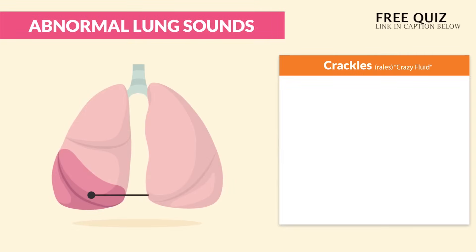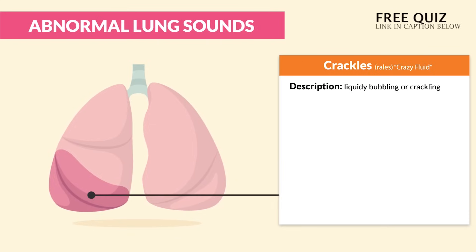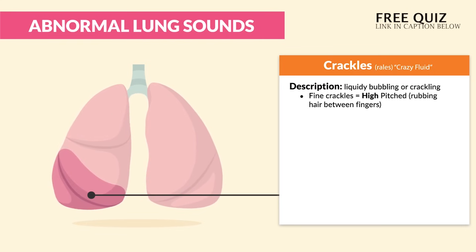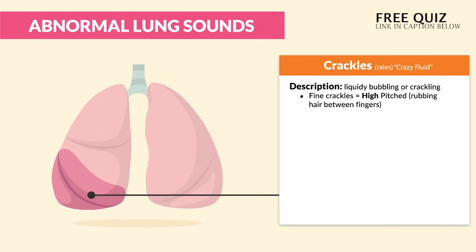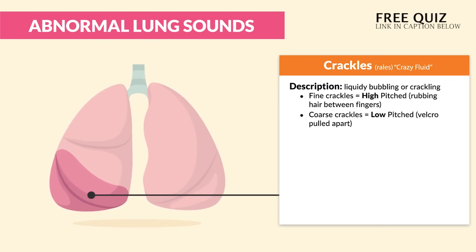Next up is crackles, also called rales — just think crackles is for crazy fluid. It's described as a liquidy, bubbling, or crackling sound. We have two types: fine crackles, described as high-pitched like rubbing hair between fingers; and coarse crackles, that low-pitched sound like velcro being pulled apart.